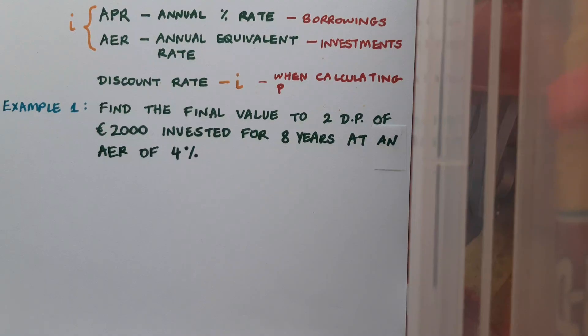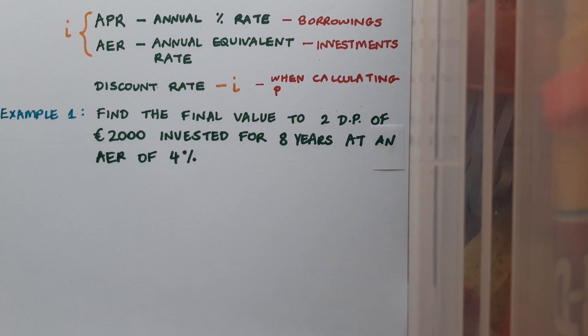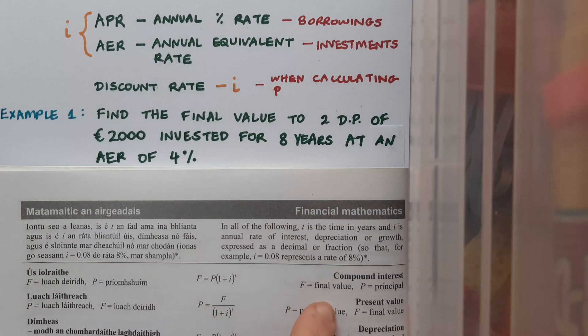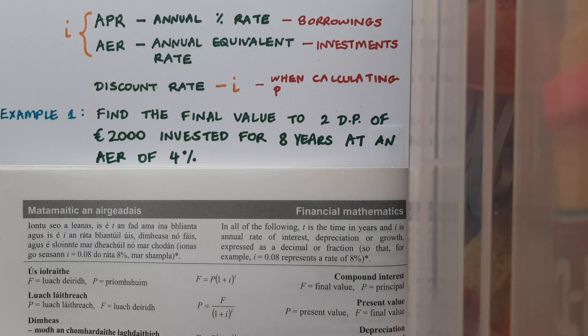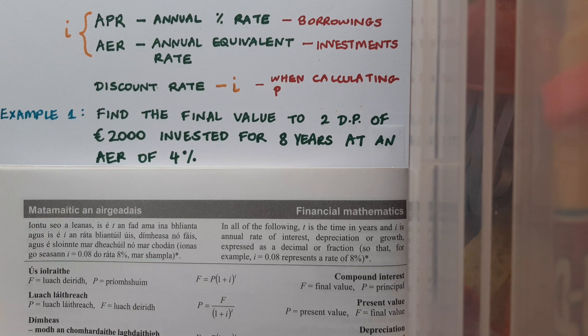So our example is find the value to two decimal places of €2000 invested for eight years at an AER of 4%. Remember that AER stands for annual equivalent rate and just refers to the interest. So the first thing I'll do is go to my log tables and pick out the correct formula, and in this case it's the first formula that we see: F equals P bracket one plus i to the power of t.